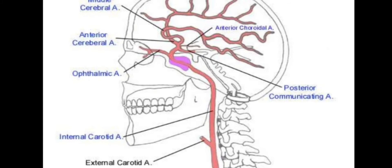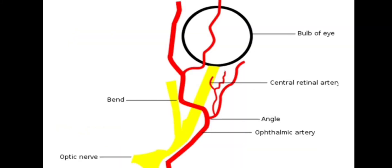The arterial supply of the orbit is mainly from the ophthalmic artery, as you can see here, which is a branch of the internal carotid artery. Sometimes the ophthalmic artery can also arise from the middle meningeal artery. It arises from the internal carotid artery just inferomedial to the optic nerve, then enters the orbit and travels through the orbital cavity and then enters the eye.